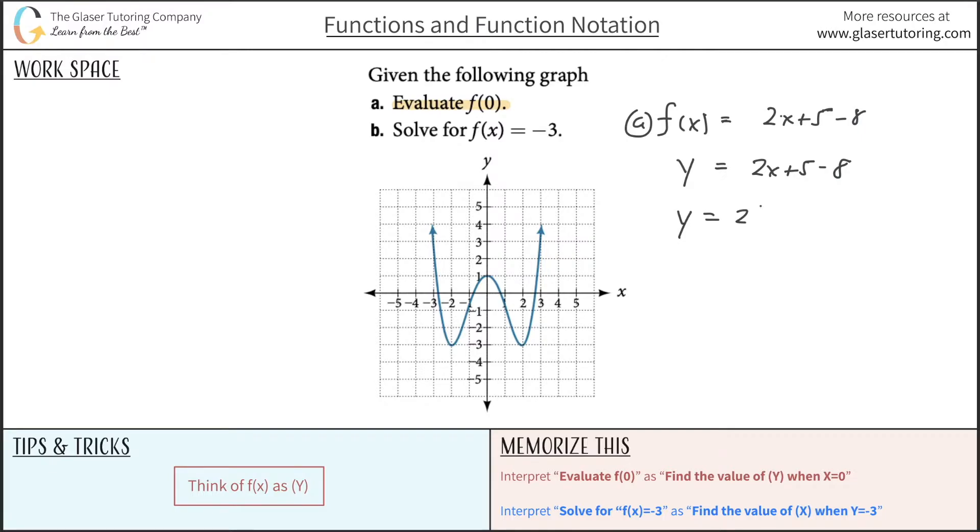So basically all we have to do here for letter a is plug zero in for x in terms of my equation. So this would be two times zero plus five minus eight, and obviously we would get a value here. Now this is not the answer, but I'm just giving you an example algebraically. The answer here would be negative three.